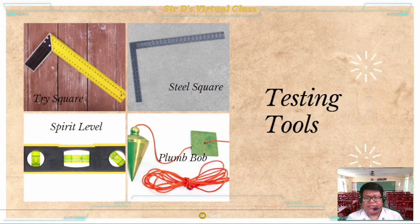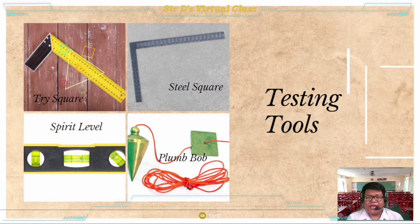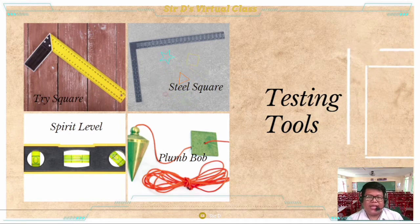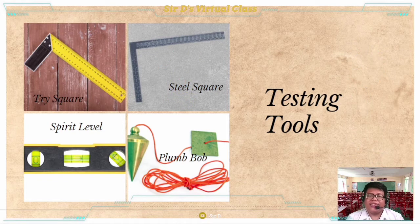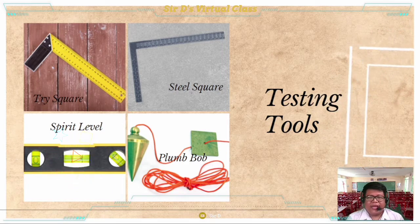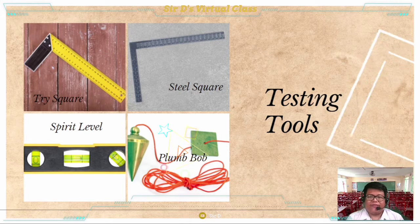The next group is the testing tools, which has four distinct tools. The tri square, also a measuring tool, is used in squaring and testing the squareness of wood. The steel square is used for framing, marking out square work, checking angles, and in the construction of roof framing and large furniture. The spirit level is a tool used to test vertical and horizontal surfaces. Lastly, the plumb bob is also used to test vertical and horizontal surfaces, similar to the spirit level.